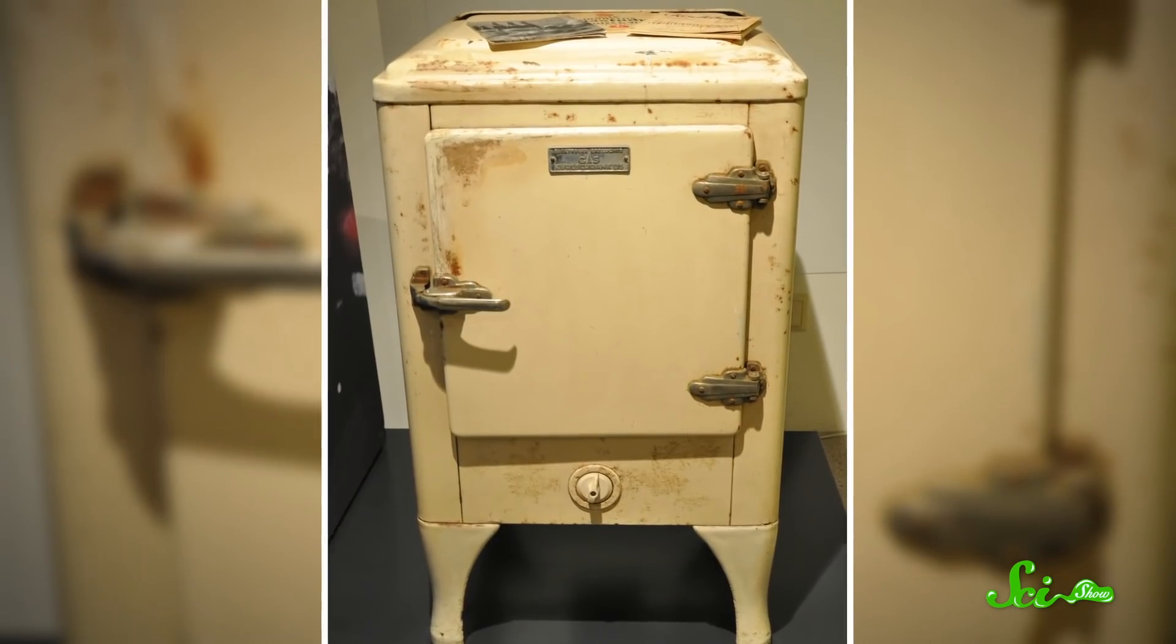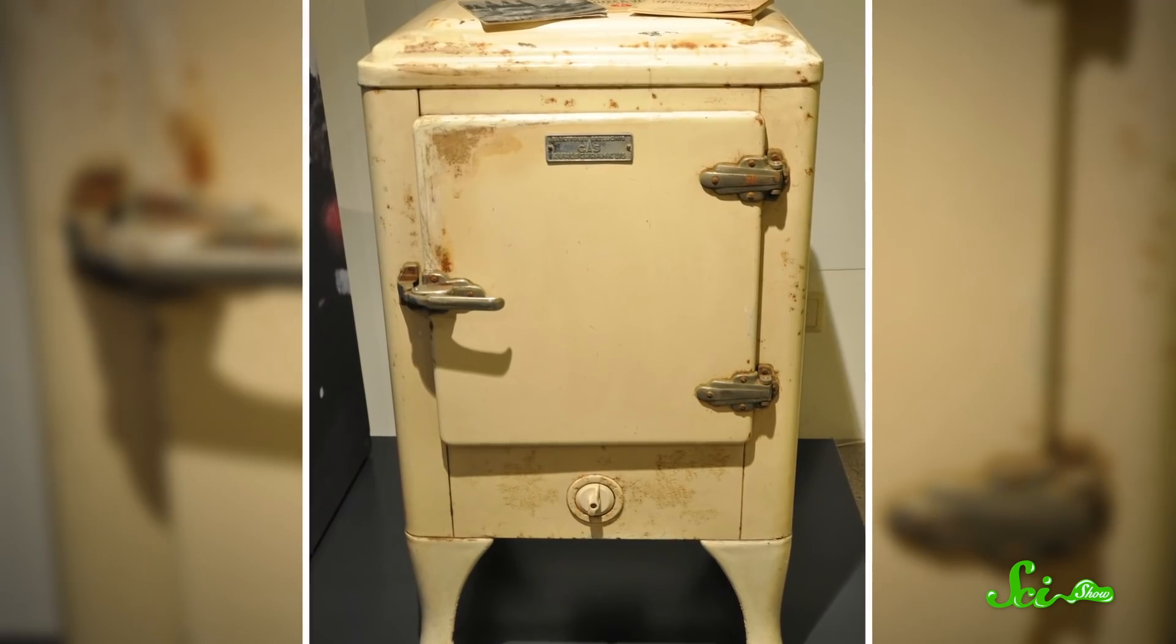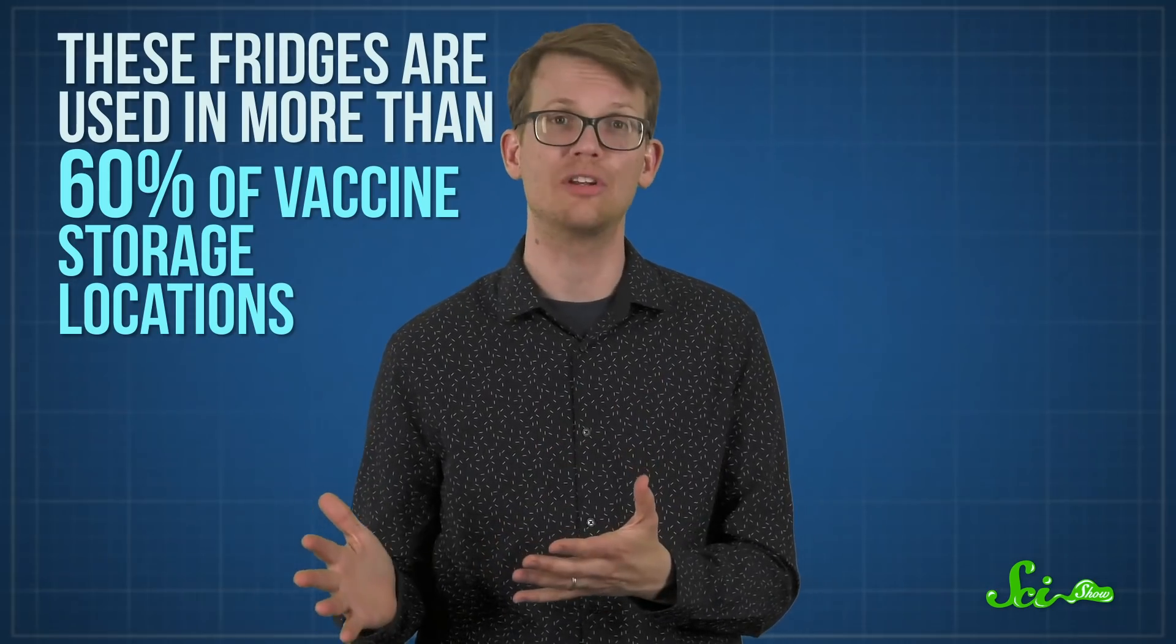Kerosene fridges were actually some of the earliest models of refrigerators, and the old-school stuff sometimes works pretty well. This has been a common way to keep medicine cold in remote areas for the last 35 years or so, and these fridges are used in more than 60% of vaccine storage locations.